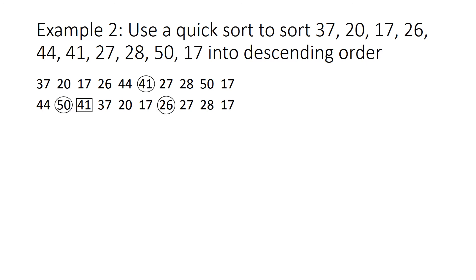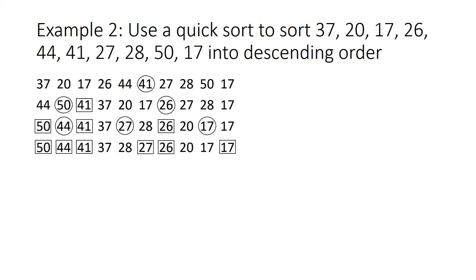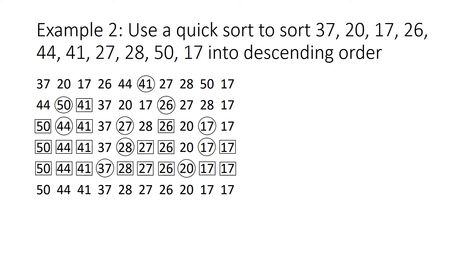Now we're going to choose our next two pivots and we'll repeat the same process. Now we've got three sublists, so we're going to choose three more pivots, one in the middle of each sublist and we're going to do that process again. And we'll keep on doing that until we've chosen every number as a pivot and now we know it's done.